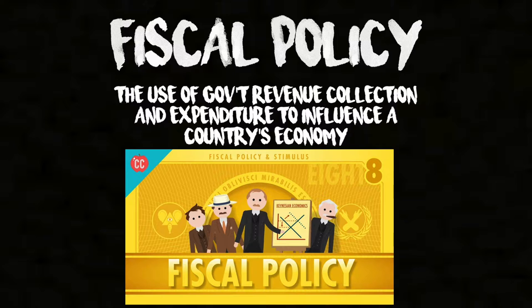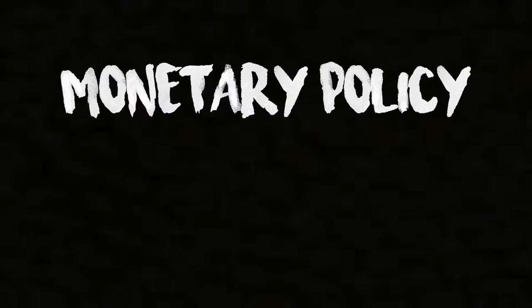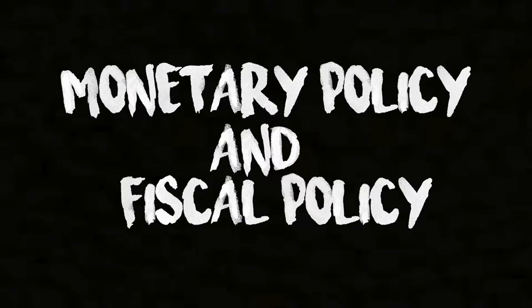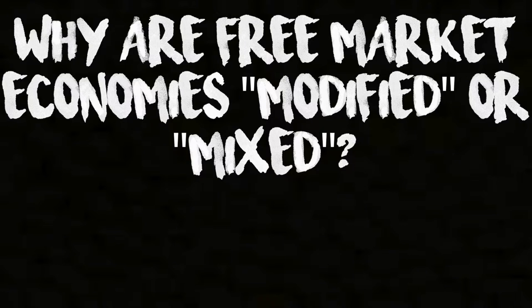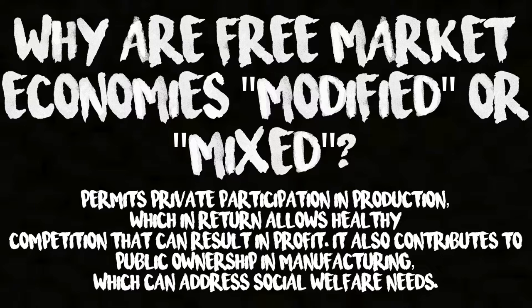Physical policy is the use of government revenue collection and expenditure to influence a country's economy. Now that we have defined monetary policy and physical policy, the question is: why are free market economies modified or mixed? This permits private participation in production, which allows healthy competition that can result in profit. It can also contribute to public ownership in manufacturing, which can address social welfare needs.